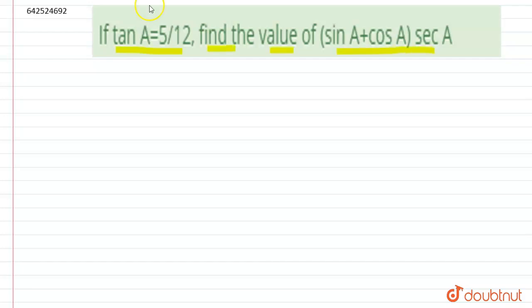It says if tan A equals 5 by 12, then find the value of sin A plus cos A into sec A. So here we have the value of tan A as 5 by 12, and we very well know the formula for tan theta, that is equal to perpendicular upon base.